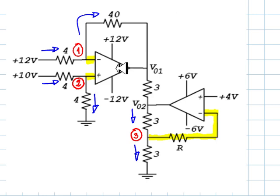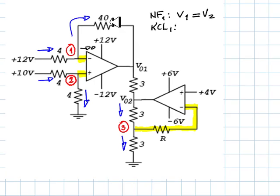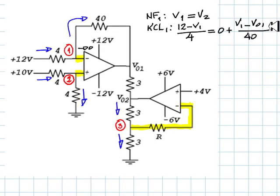The first op-amp has negative feedback. That means that V1 is equal to V2. Negative feedback equation for op-amp 1 is V1 equals V2. Kirchhoff's current law for node 1: the current going in, which is 12 volts minus V1 over 4, is equal to the current leaving, which of course we know is zero amps, plus the one on the top, V1 minus V01 divided by 40.